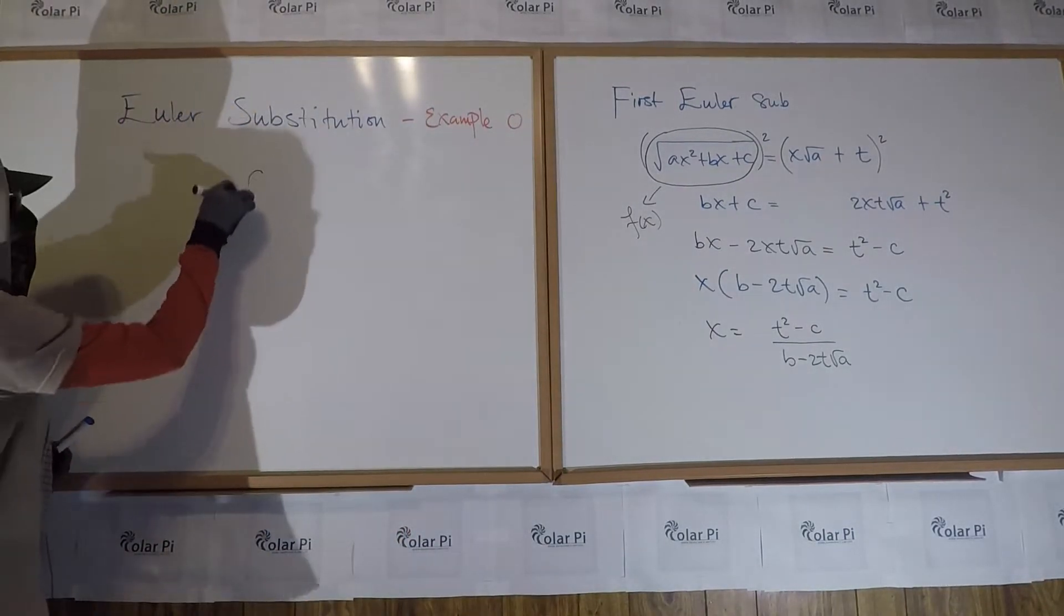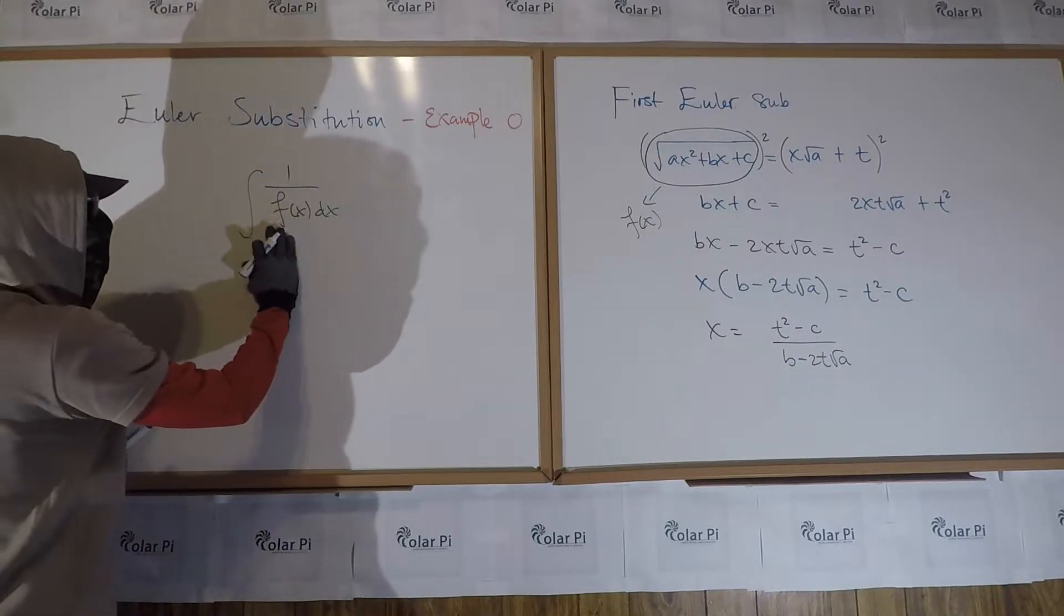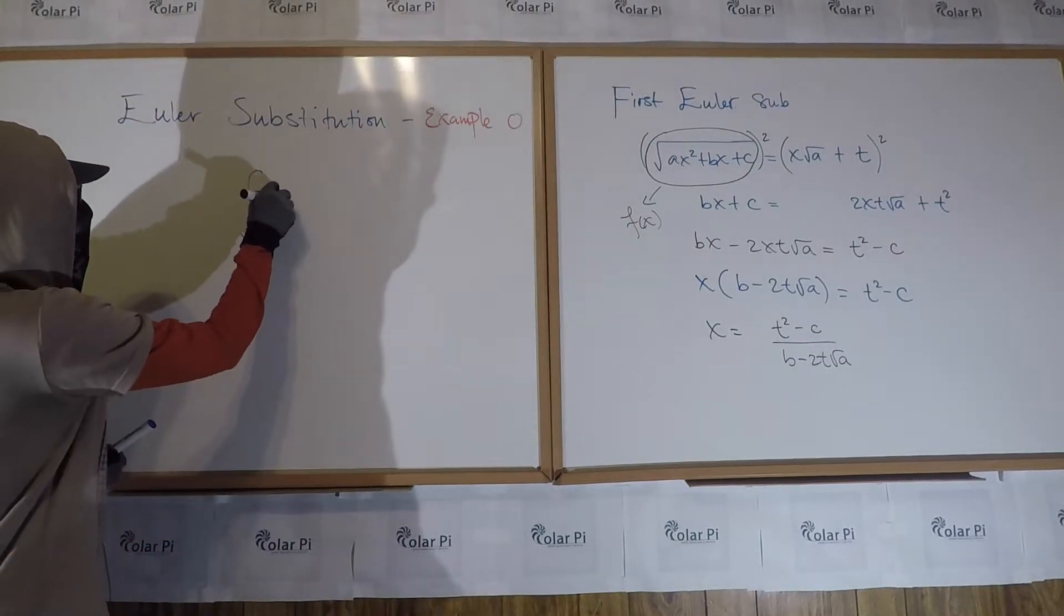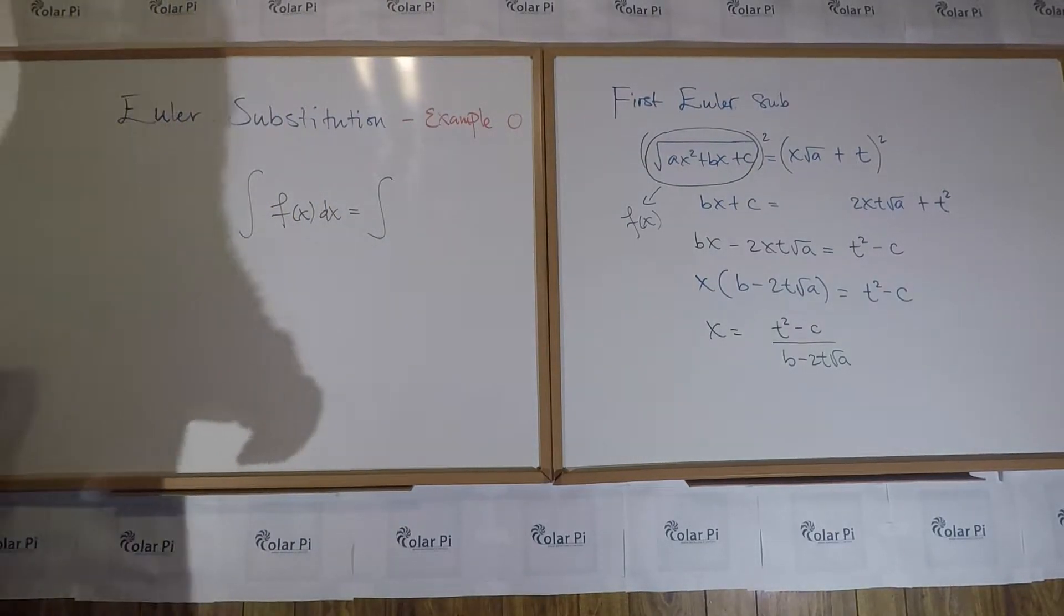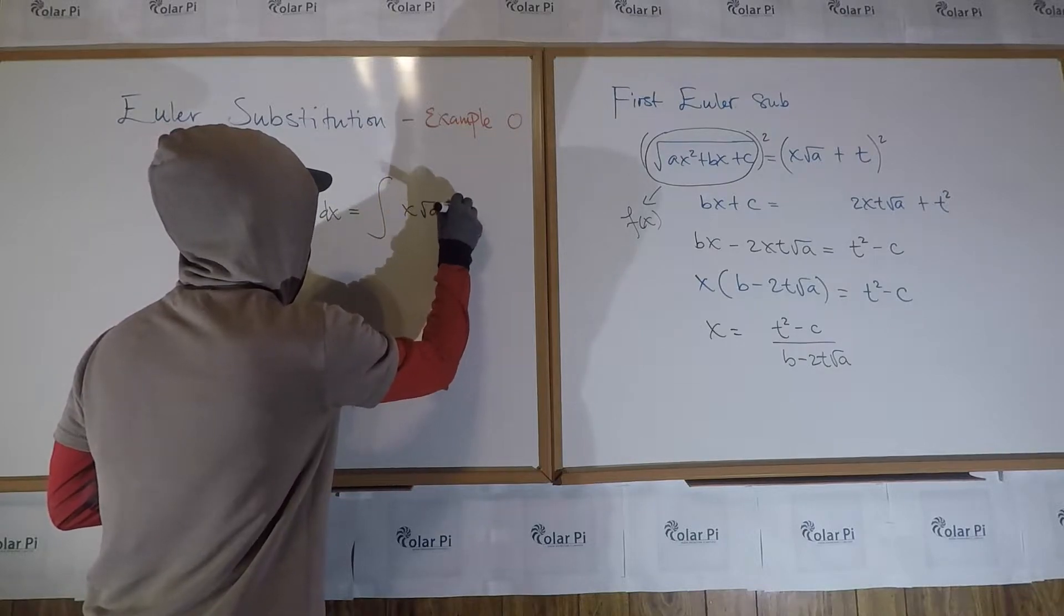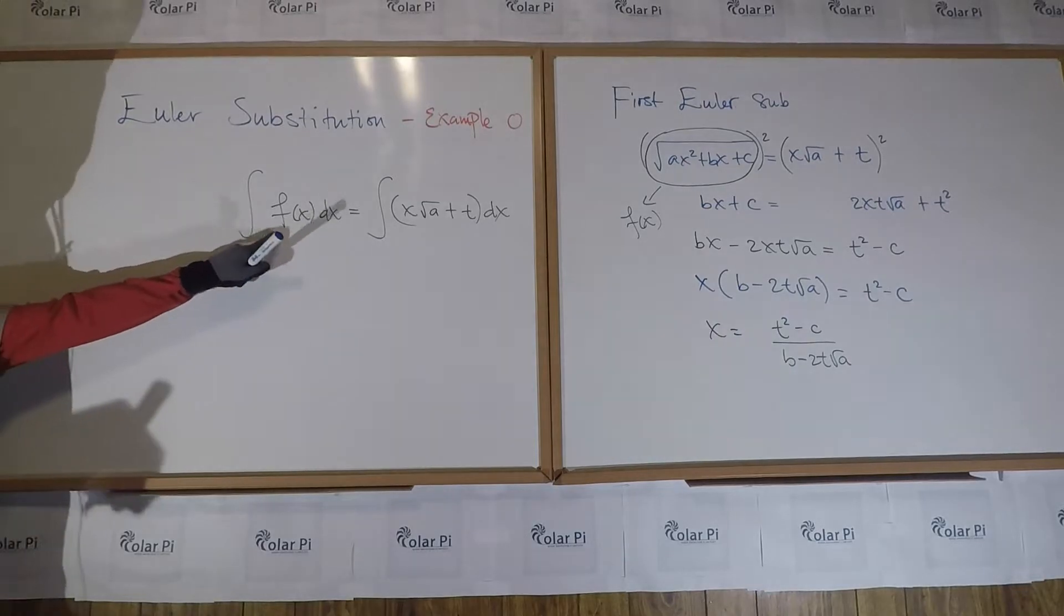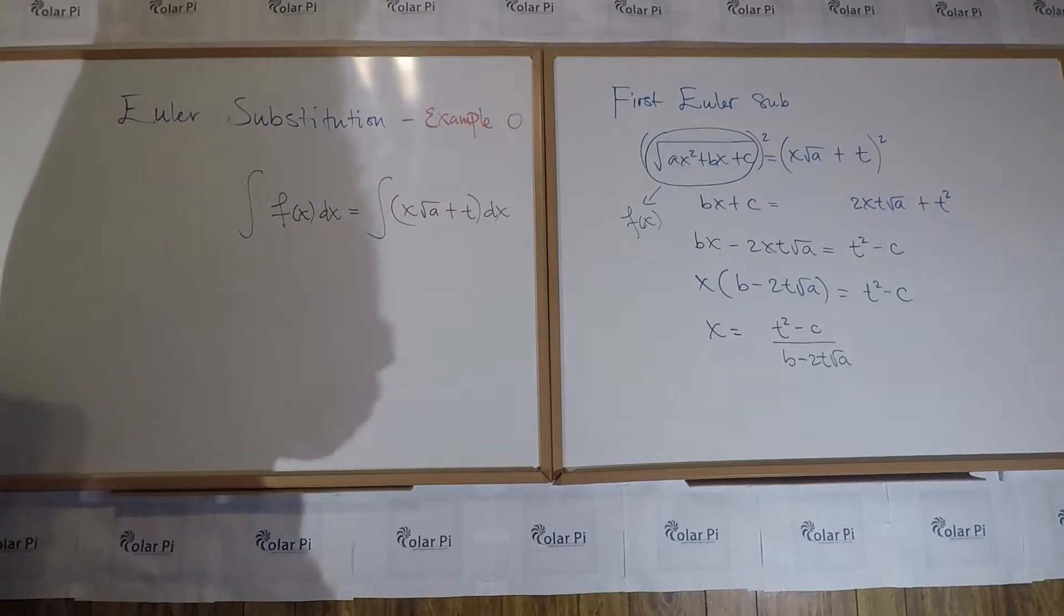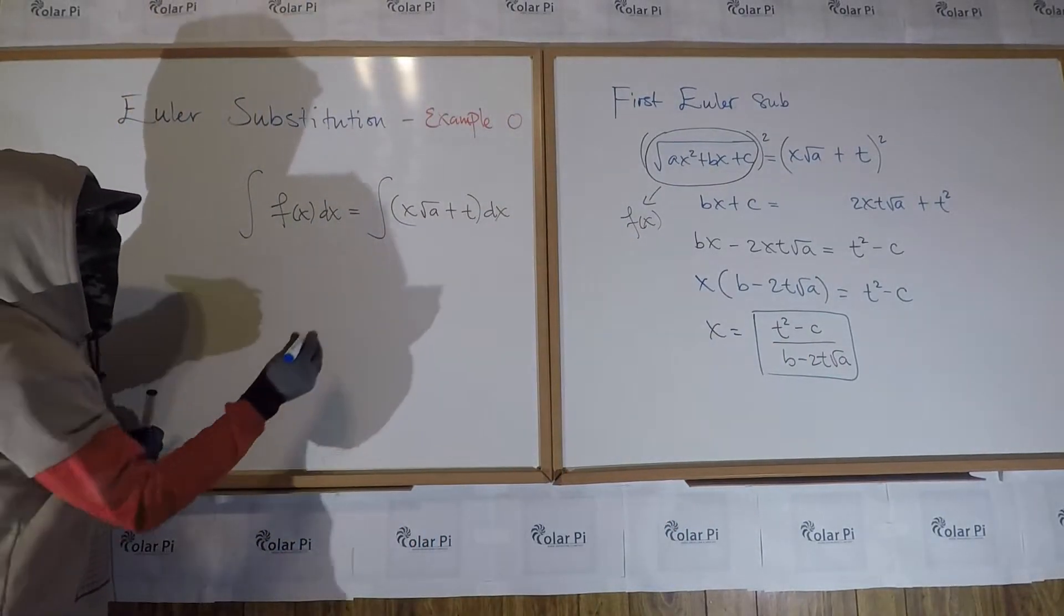So then we could divide by this on both sides to write that x is equal to t squared minus c divided by b minus 2t root a. Now, remember, we said that your integral involves this guy, right? And let's call this guy f of x, and it is a function of x. So what you have to start is something like f of x dx or 1 over f of x dx, something that involves f of x.